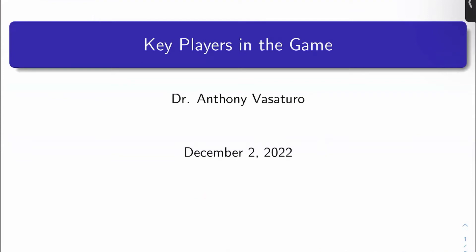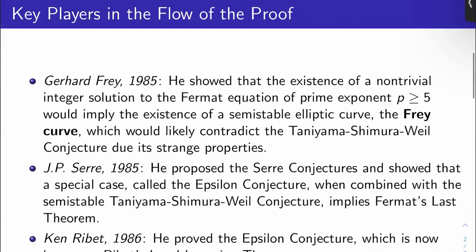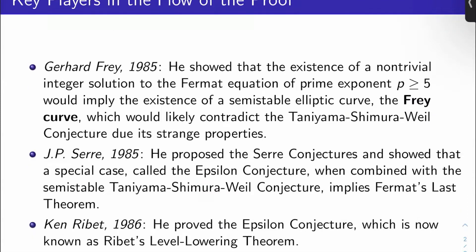Welcome back to the next video everybody. Today we are going to look at some of the key players in history and in the proof of Fermat's last theorem. This will be a quick one today. So key players in the flow of the proof — I would say that we've got five of them.